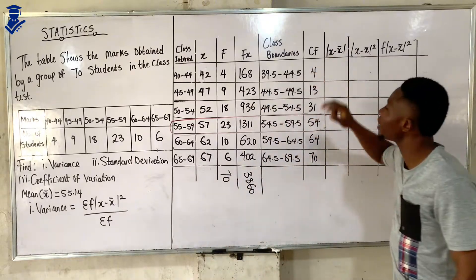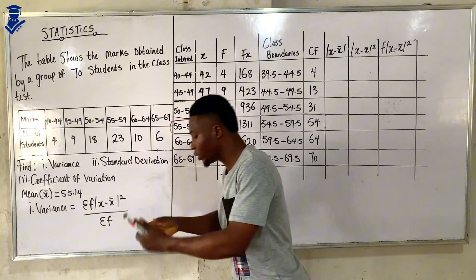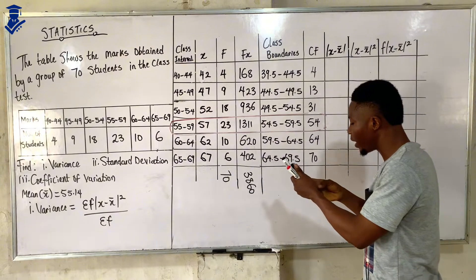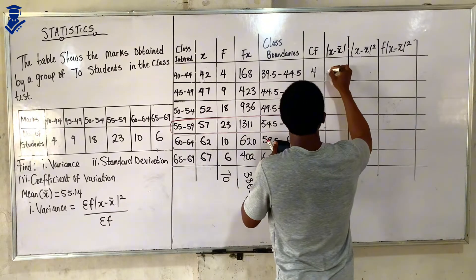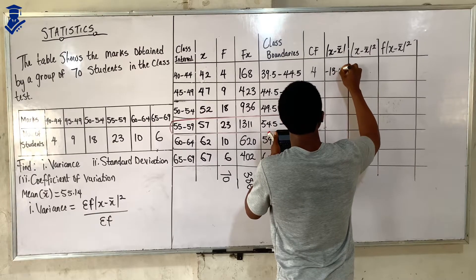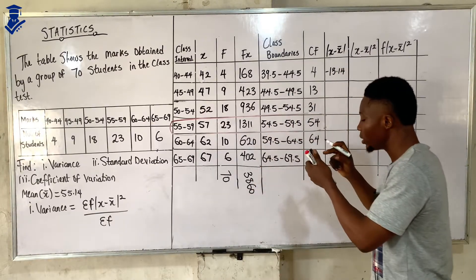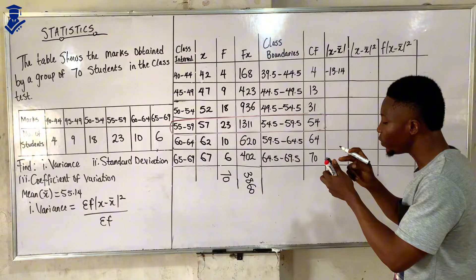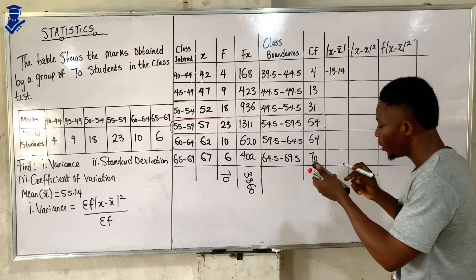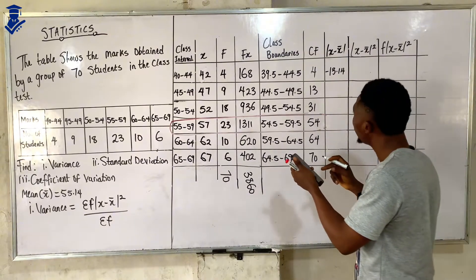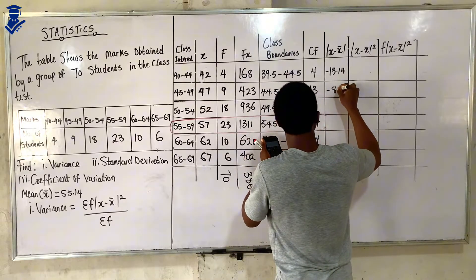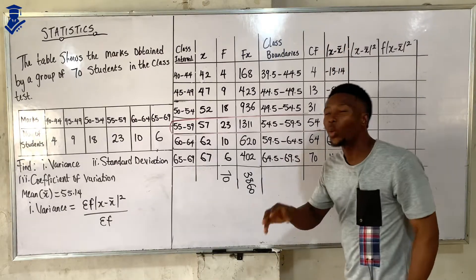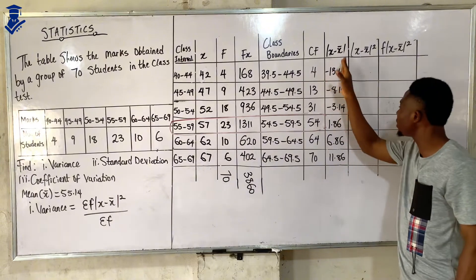Starting with x minus x-bar: the first value is 42 minus 55.14, which gives us negative 13.14. The next one is 47 minus 55.14, giving us negative 8.14. We keep repeating this same process for all the data values.